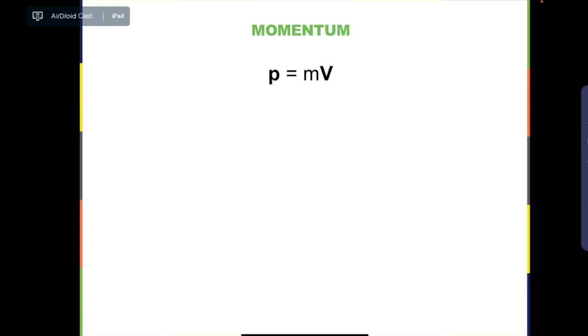Since mass is a scalar and velocity is a vector, the linear momentum is also a vector. Its direction is the same as that of the velocity. The unit for linear momentum is kilograms meters per second.